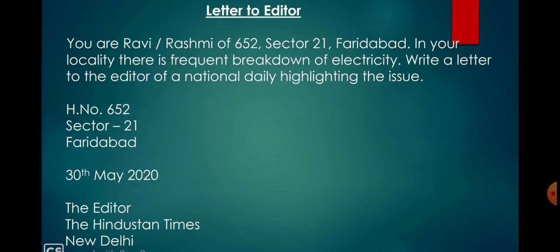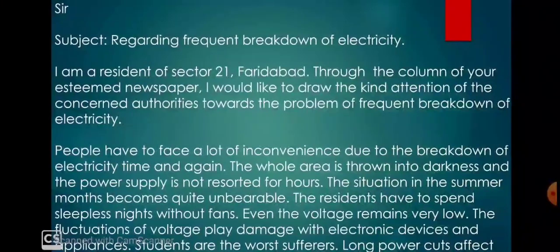First of all, we will write the sender's address: House number 652, Sector 21, Faridabad. After that, we will leave a line, then the date will be mentioned: 30th May 2020. Then we will leave a line. First we will write the designation of the receiver — the Editor, the Hindustan Times, New Delhi. After that, we will write the salutation: Sir. Then the subject: regarding frequent breakdown of electricity.